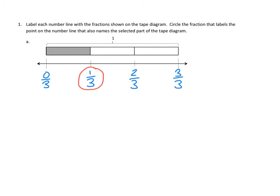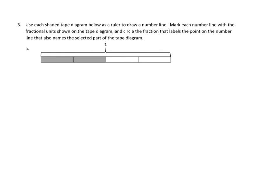Let's take a look at problem number three A. We are going to use each shaded tape diagram below as a ruler to draw a number line — so we're going to supply the number line rather than just supply the markings. Mark each number line with the fractional units shown on the tape diagram, and circle the fraction that labels the point on the number line that also names the selected part of the tape diagram. Again, here's that awkward phrasing.